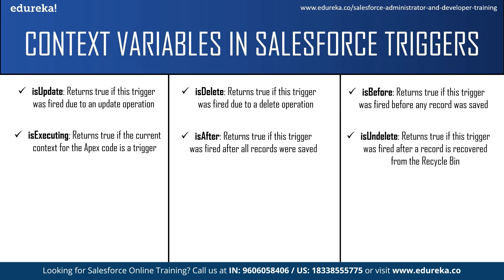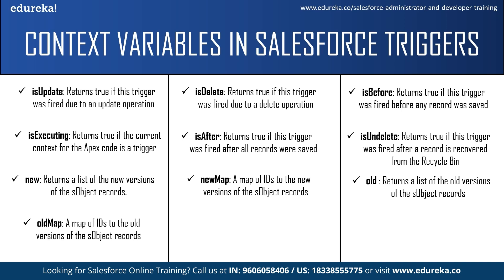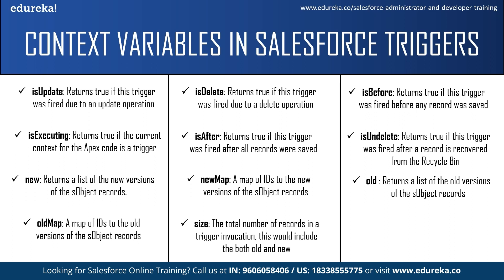Next is isUndelete, which returns true if the trigger was fired after a record was recovered from the recycle bin. Next we have the 'new' context variable, which returns a list of new versions of Salesforce object records — available in insert, update, and undelete triggers, and records can only be modified in before triggers. 'newMap' is a map of IDs to new versions of S object records, available in before update, after insert, after update, and after undelete triggers. 'old' returns a list of old versions of S object records, available in update and delete triggers. 'oldMap' is a map of IDs to old versions of S object records, also available in update and delete triggers. Finally, 'size' returns the total number of records in a trigger invocation, including both old and new.